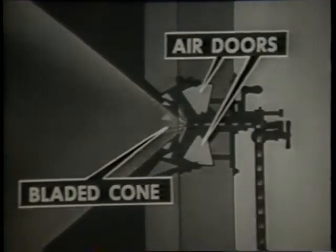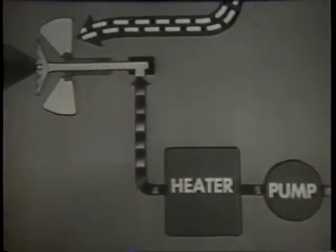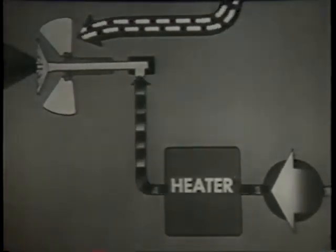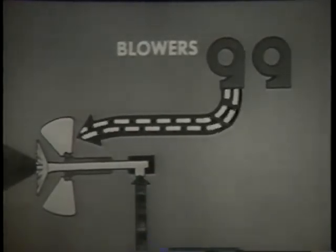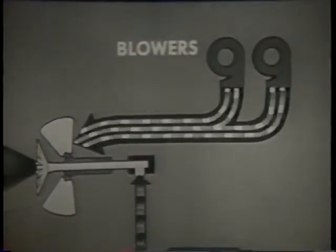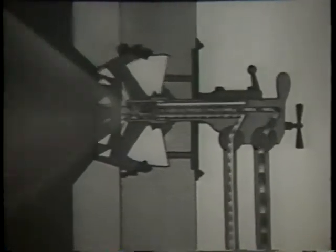In burners with mechanical atomizers of the pressure type, the sprayer plate atomizes the oil, heated and under pressure. The register gives the blast of air from the blower a rotating motion and mixes the air with the oil. You vary the pressure on the oil supply line to control the amount of oil entering the furnace. You vary the speed and number of force draft blowers. In the return flow burner, you vary the pressure on the return oil line to control the amount of oil entering the furnace.